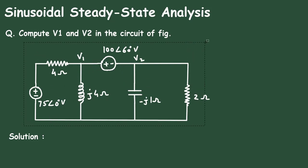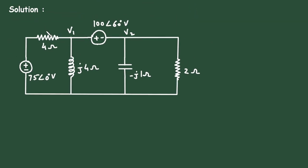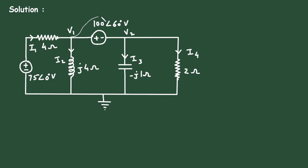First of all, we will take this circuit. Let's say this is the reference node, because we are assuming all the currents towards this reference node. This is current I1, this is current I2, this is current I3, and this is current I4. And here, this forms a super node — from here to here, this is the super node.